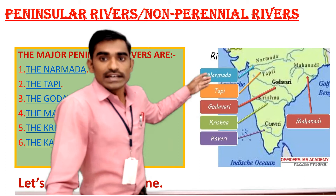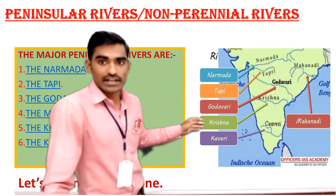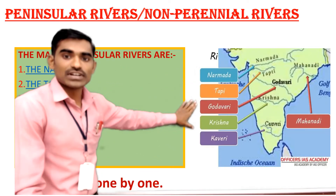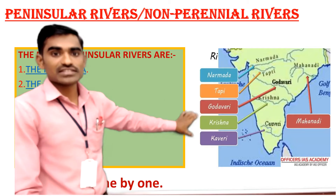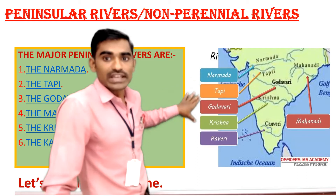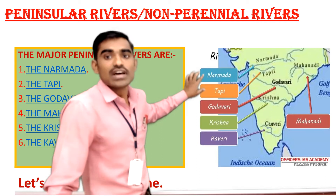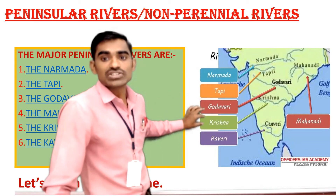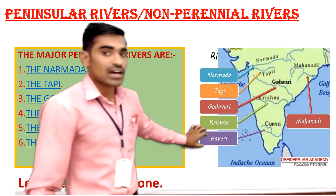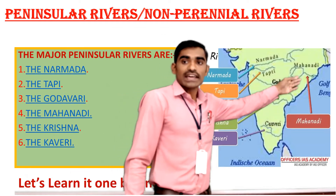You should know the order of rivers if you are coming from north towards the south side in peninsular India. They are arranged from north to south: first the Narmada, then Taapi — these two are the west flowing rivers. After that you will get Godavari, Krishna, and Kaveri. Kaveri is the southernmost big river. And towards the east side you have the Mahanadi river.